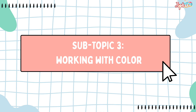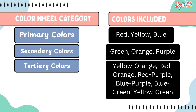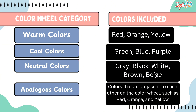Next, working with color. We have color wheel categories: primary colors — red, yellow, and blue; secondary colors — green, orange, and purple; and tertiary colors — yellow-orange, red-orange, red-purple, blue-purple, blue-green, and yellow-green. Warm colors are red, orange, and yellow, while cool colors are green, blue, and purple. Neutral colors are gray, black, white, brown, and beige. Analogous colors are adjacent to each other on the color wheel, such as red, orange, and yellow.